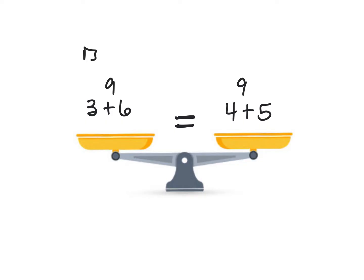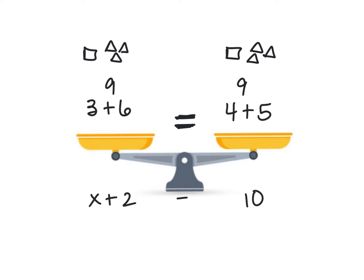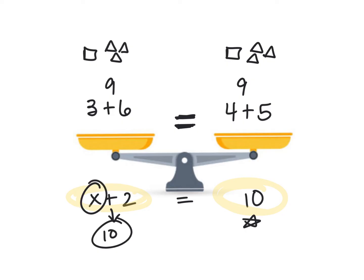Same thing if I have a square and 3 triangles on one side — for it to be balanced, I also have to have a square and 3 triangles on the other side. All equations start out balanced; whatever you have on one side equals whatever's on the other side. So if on one side I have x plus 2, and on the other side I have 10, then whatever's on the x plus 2 side also has to equal 10. Our goal is to figure out what x has to be to make that true.